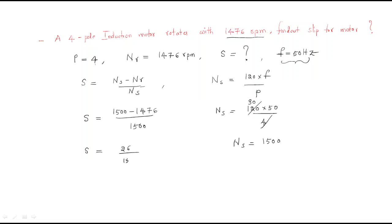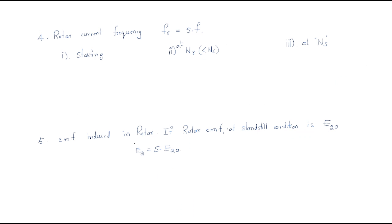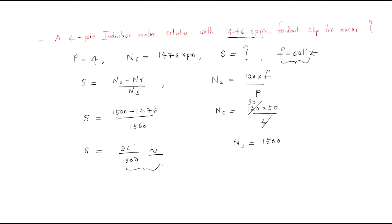The slip value equals 1500 minus 1476 by 1500, which equals 26 by 1500, giving the slip value as approximately 0.0173. This is the procedure to find the slip whenever the rotor speed and frequency are given. In this session we discussed some important formulas and concepts, along with a small problem. Thank you.